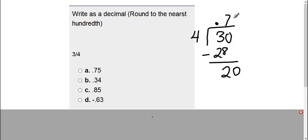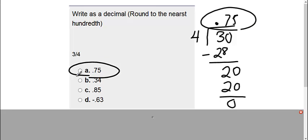Four goes into twenty five times evenly. Therefore I get my decimal answer as 0.75 which is choice A.